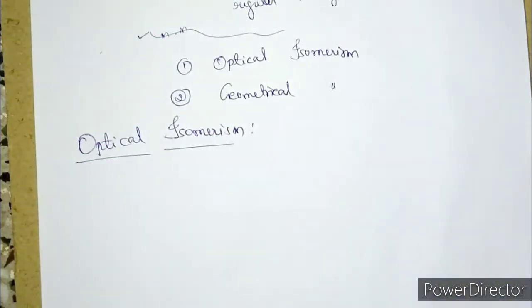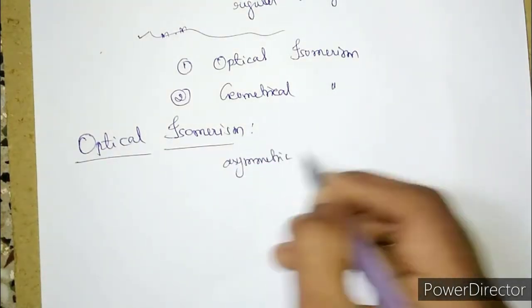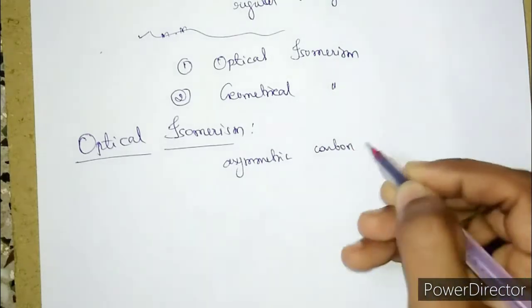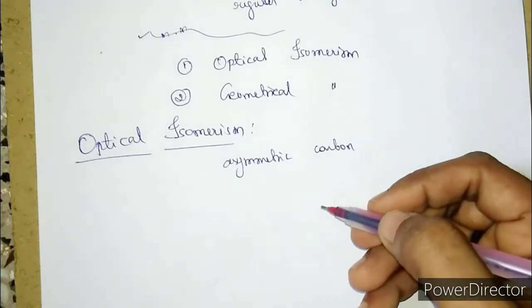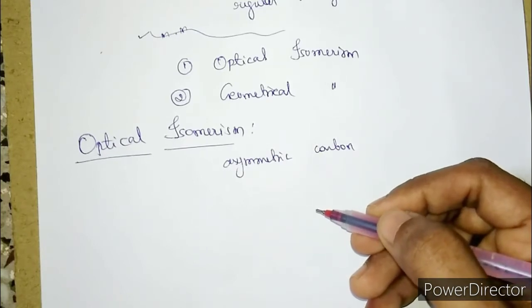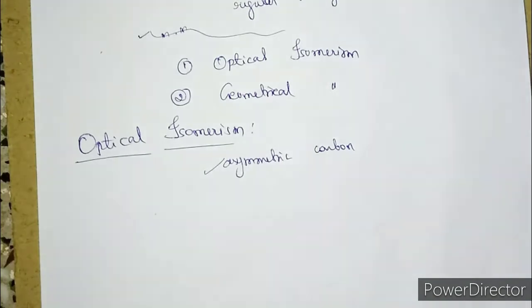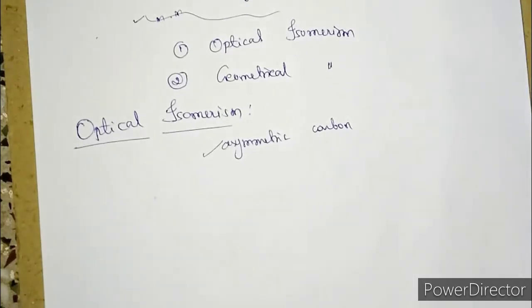We know that if any compound is optically active, then that compound must have an asymmetric carbon center. An asymmetric carbon center should be present in a compound for that compound to be optically active. Just like that, in the polymer also, if we have an asymmetric carbon, then that particular polymer will exhibit optical isomerism.